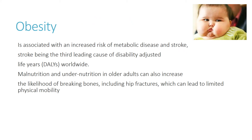Obesity is associated with an increased risk of metabolic disease and stroke, which is the third leading cause of disability-adjusted life years (DALYs) worldwide. Malnutrition and undernutrition in older adults can also increase the likelihood of brittle bones and hip fractures, which can lead to limited physical mobility.